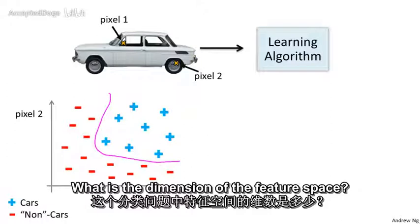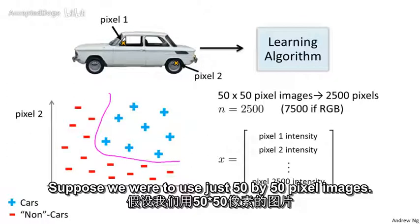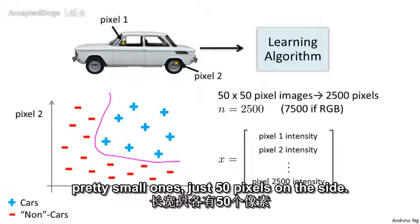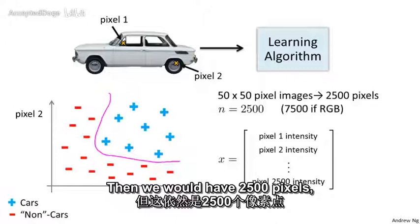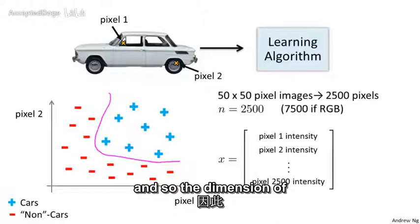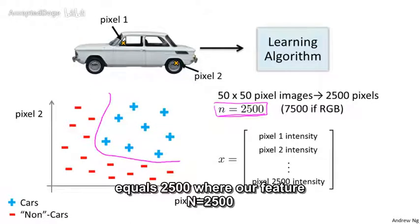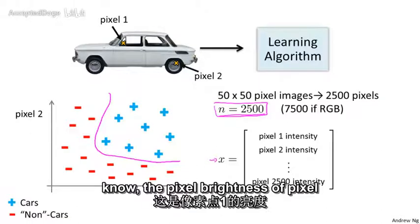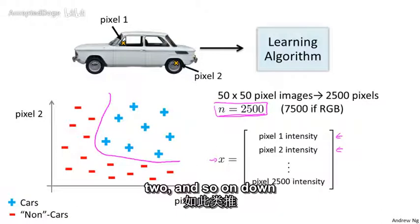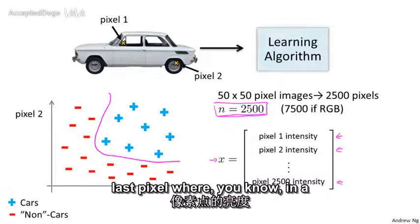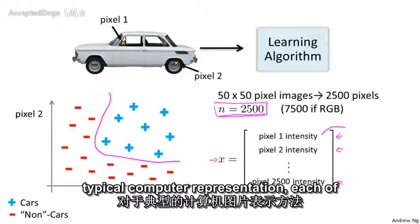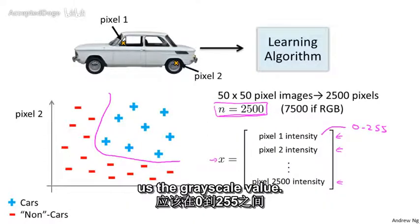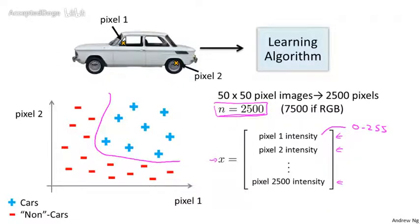What is the dimension of the feature space? Suppose we were to use just 50 by 50 pixel images. That is, suppose our images were pretty small ones, just 50 pixels on the side. Then we would have 2,500 pixels. And so the dimension of our feature size will be n equals 2,500, where our feature vector x is a list of all the pixel intensities. The pixel brightness of pixel one, the brightness of pixel two, and so on, down to the pixel brightness of the last pixel. Where in a typical computer representation, each of these may be values between say 0 to 255, if it gives us maybe the grayscale value. So we have n equals 2,500.